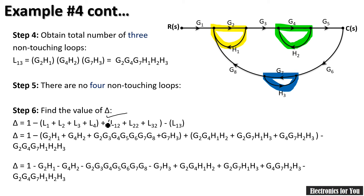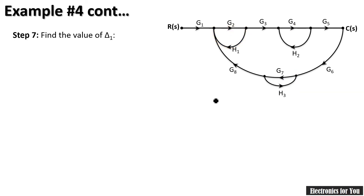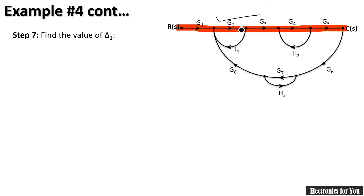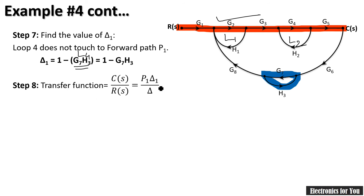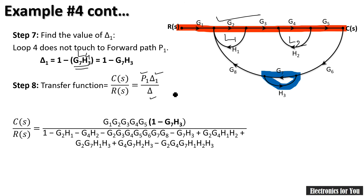Step number 7 is to find delta one. Since there is only one forward path, we need only delta one. Delta one equals 1 minus any loops not touching the forward path P1. Loops L1, L2, and L3 all touch the forward path, but L4 does not. Therefore delta one = 1 − G7·H3. Finally, the transfer function is P1·delta1 / delta. Substituting all values gives us the final answer.